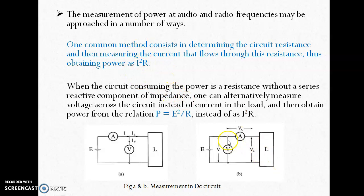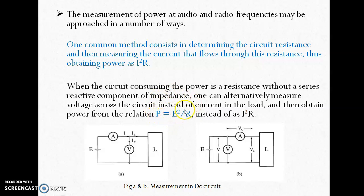If there is no resistance in series with the load in the circuit, then we can directly measure the voltage of the load and use the formula V²/R — that is, voltage squared instead of I²R.